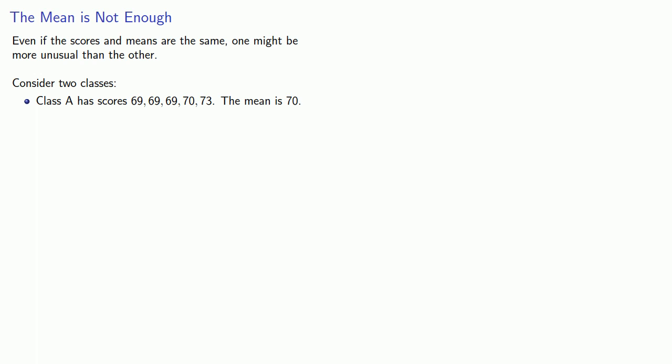Or we might take a different class, Class B, with scores of 45, 73, 74, 76, 82. And if you calculate the mean for this class, you'll find that the mean is 70.